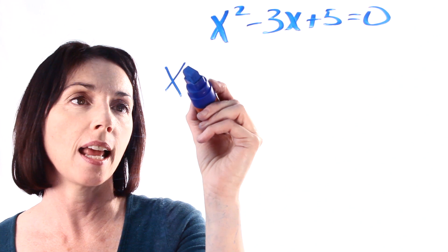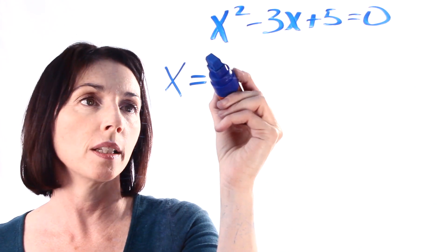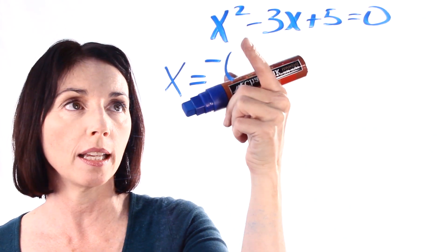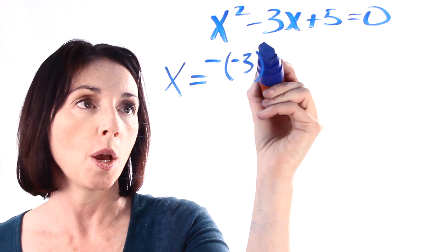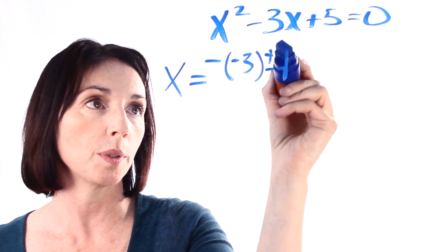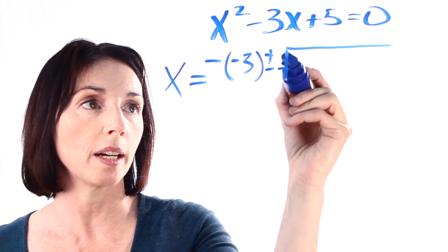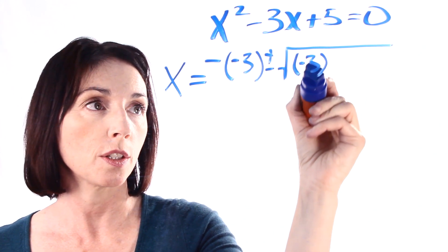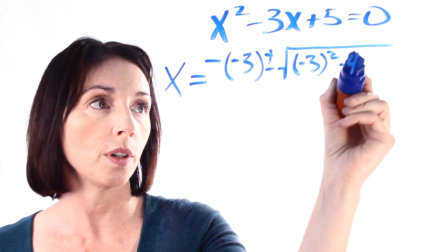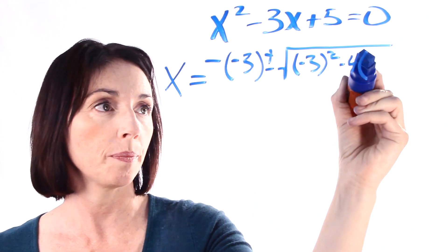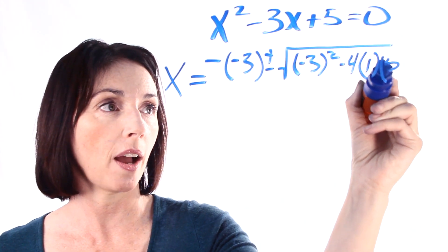So the formula says that x is equal to the opposite or minus of b, and in our case b is minus 3, plus or minus the square root of b squared, so minus 3 squared, minus 4 times a, which is 1, times c, which in our case is 5.